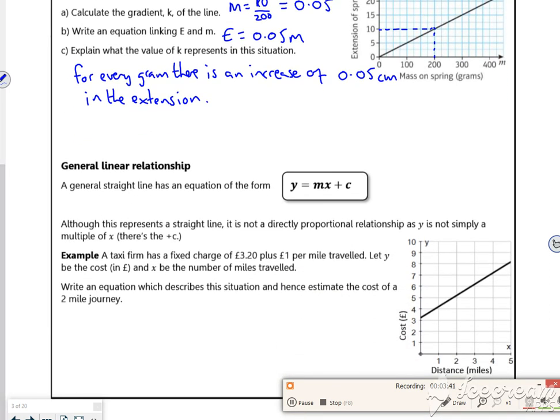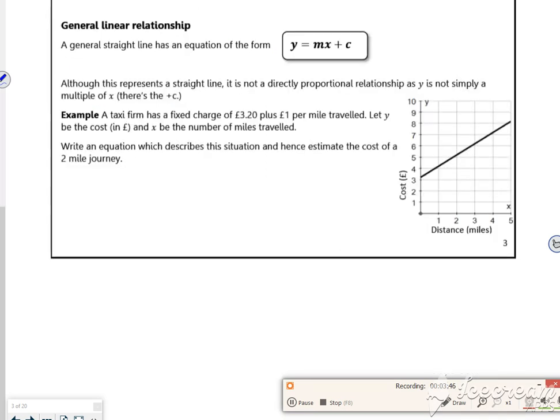Right then, next one. We're on 3 minutes 40. So I think I can probably do this next one. So this one is moved away from the origin. So taxis, so we've got £3.20 plus a pound a mile. Okay, so all right, fair enough. So that's going to be an equation of y equals x plus 3.2. So that's okay. That's fair enough. So 2 mile journey is going to be 2 plus 3.2, £5.20. That's not too bad, is it?